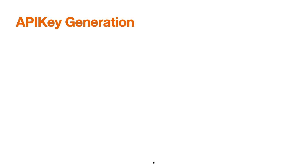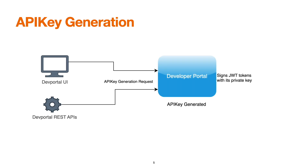There are two ways to generate the API key. First, through the developer portal UI: the developer logs in, creates an application, navigates to the API key section, and generates the key — making sure subscription happens before key generation. The second option is through the developer portal REST APIs. WSO2 API Manager provides REST APIs to generate API keys, and we can follow those steps programmatically.